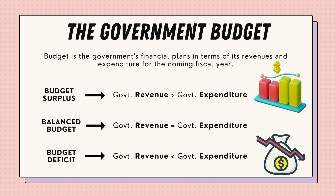The government budget is the government's financial plans in terms of its forecasted revenues and expenditure for the coming fiscal year. A budget surplus is when the government revenue is greater than government expenditure. A balanced budget is when government revenue is equal to government expenditure. And a budget deficit is when the government revenue is lesser than the government expenditure.